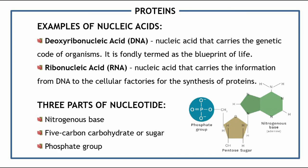Examples of nucleic acids are the following. First, we have deoxyribonucleic acid, or DNA — a nucleic acid that carries the genetic code of organisms, fondly termed the blueprint of life. Every creature in the world has its own DNA. Next, we have ribonucleic acid, or RNA, a nucleic acid that carries the information from DNA to the cellular factories for the synthesis of proteins. A nucleotide has three parts: nitrogenous base, 5-carbon carbohydrate (or simply sugar), and a phosphate group — these are the compounds found in the building block of nucleic acids.